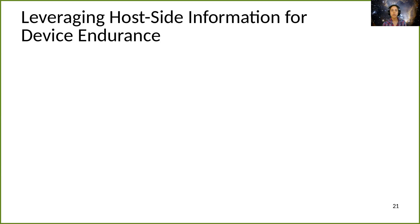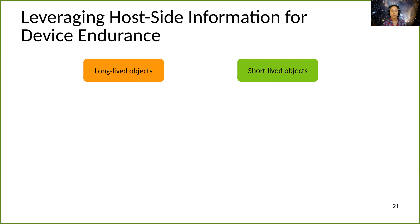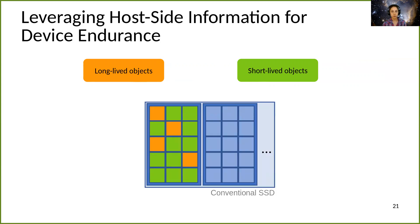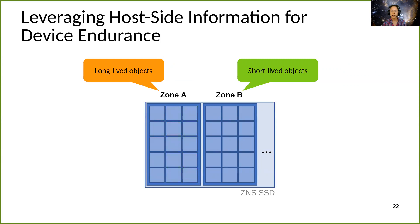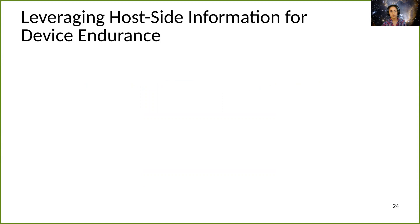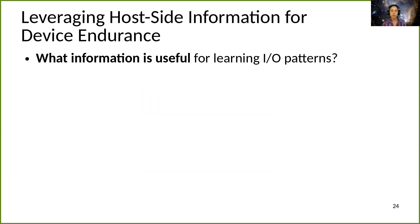To make this concrete, consider an application that writes long-lived data and short-lived data, where the short-lived objects get logically deleted faster than the long-lived objects. If these objects were interleaved on the device, as could happen on a conventional SSD, the long-lived objects would get repeatedly copied forward when the invalidated short-lived objects were garbage collected. If we could identify the long-lived objects, then ZNS makes it really easy to keep them in separate erase blocks. The host simply needs to write each type of object to a different zone. The short-lived objects can then be erased independently of the long-lived objects, avoiding unnecessary copy-forward and therefore device wear.